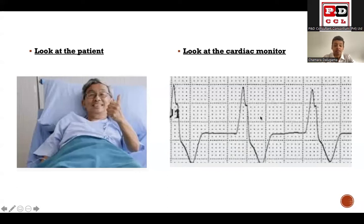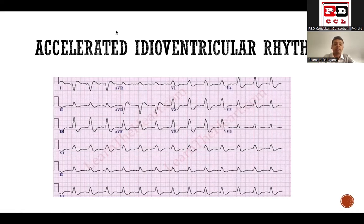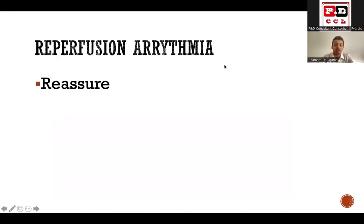What has happened here? This is called accelerated idioventricular rhythm. Sometimes after thrombolysis you can have a broad complex regular tachycardia, but the rate is not as high as in ventricular tachycardia. This ECG is very worrying on the cardiac monitor, but you always need to look at the patient. If the patient is okay, blood pressure is stable, and he has a good pulse, this is accelerated idioventricular rhythm - a reperfusion arrhythmia. The main management is to reassure yourself, the patient, and the nurse. It tells you that reperfusion is happening appropriately.